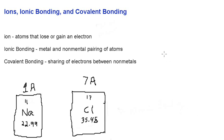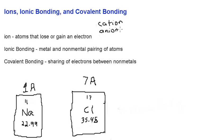So what is an ion? An ion is simply an atom that loses an electron or gains an electron. There are two types of ions: one is called a cation, and the other type is called the anion. The cation loses electrons, and the anion gains electrons.